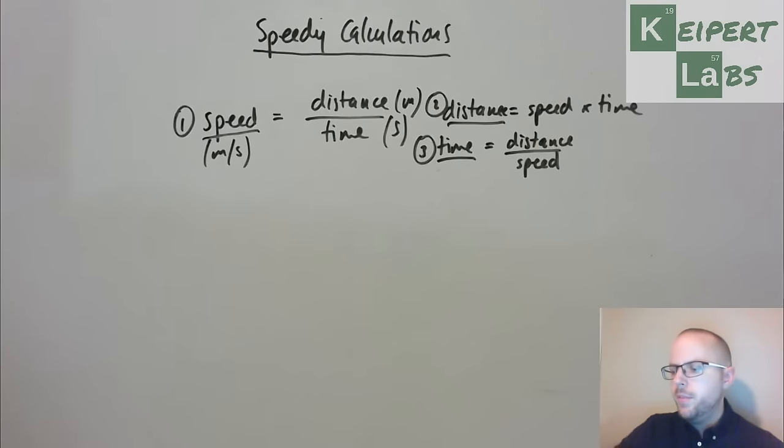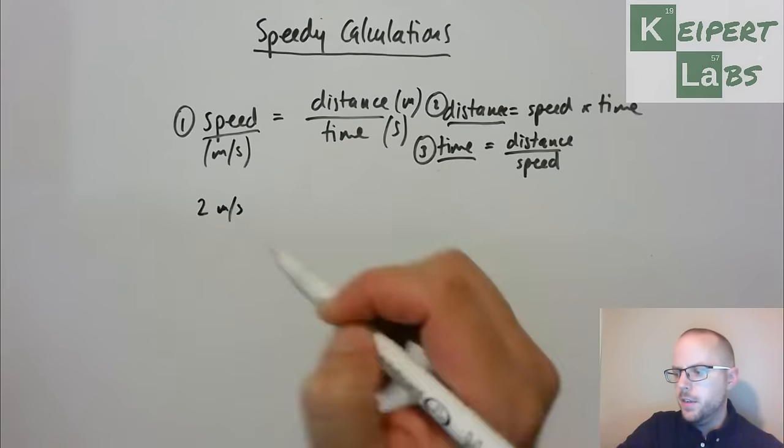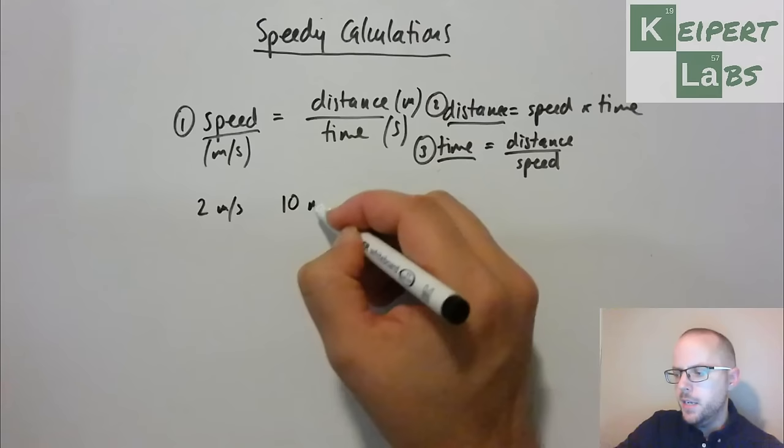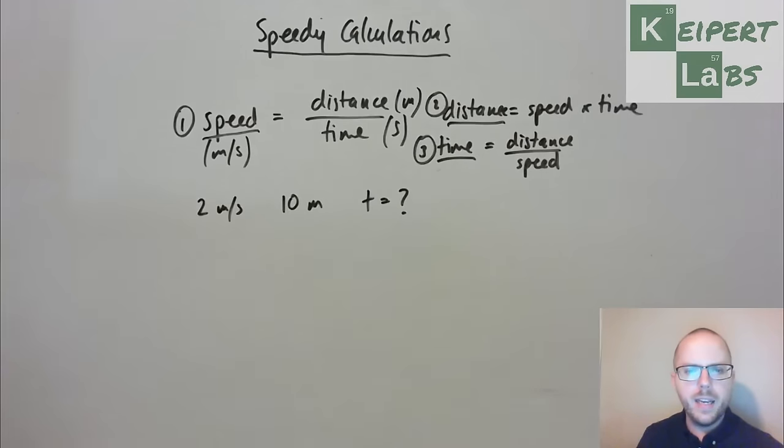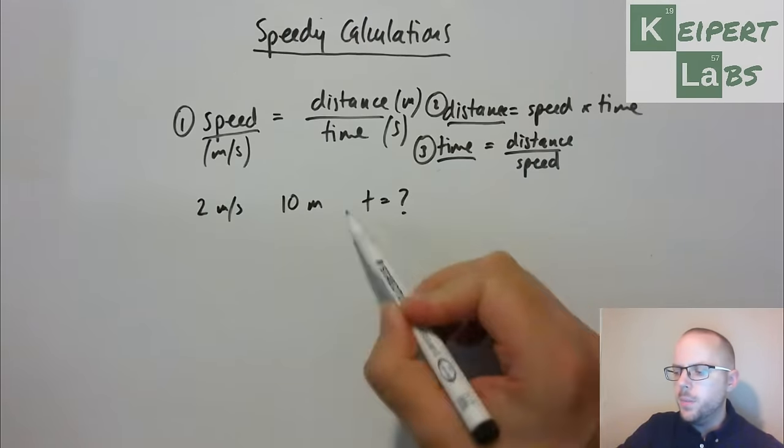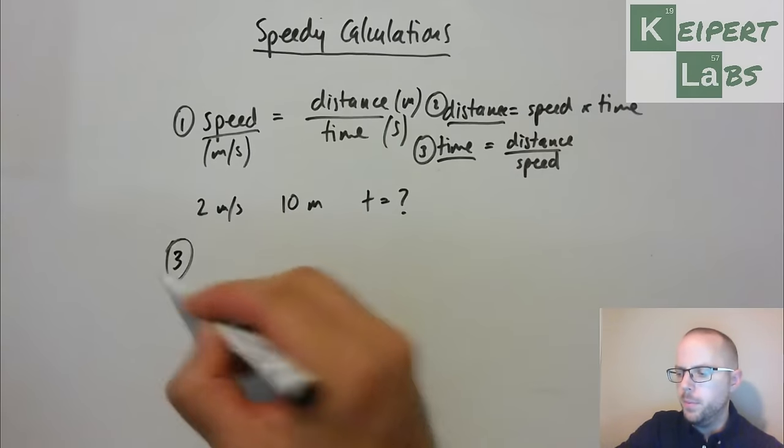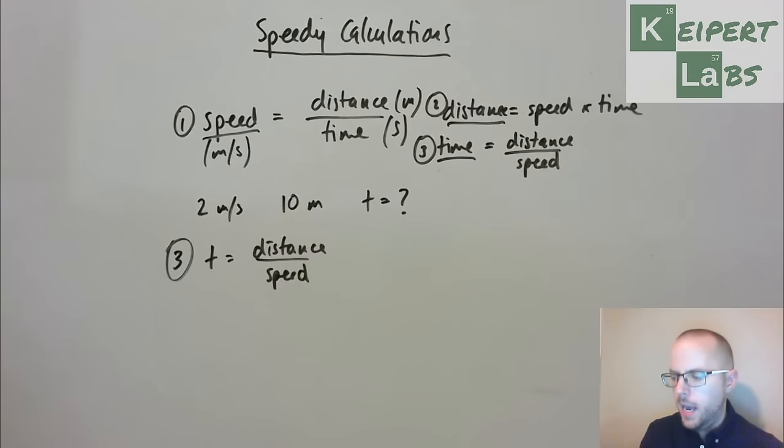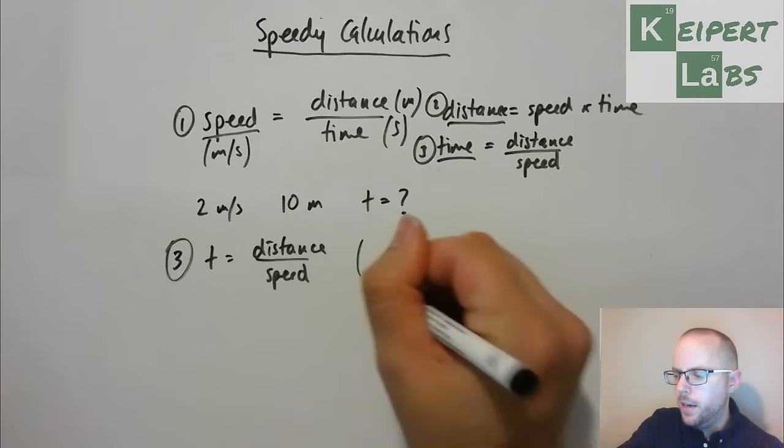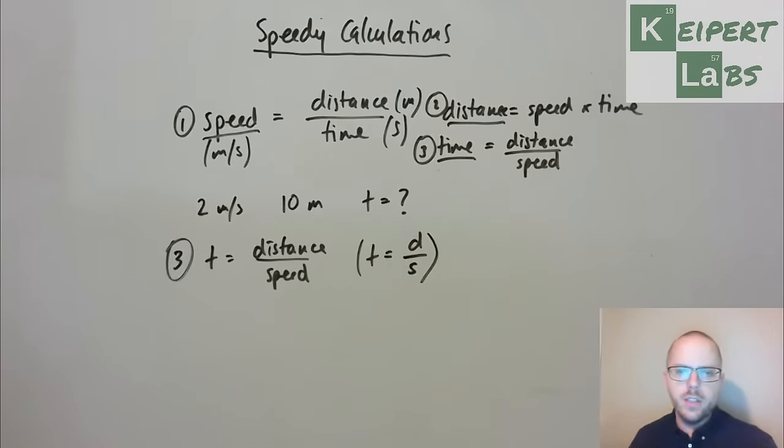So if we have an object that has a speed of 2 metres per second and travels a distance of 10 metres, then we want to know, alright, well how long, what time would that take? So because the time is the thing that we want to try and find, we're going to use version 3 of our formula. So we're going to look at time equals distance over speed, and we could abbreviate it as t equals d over s, distance over speed.